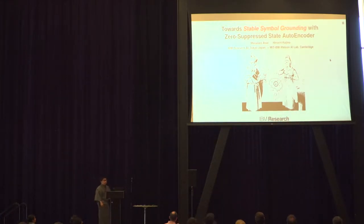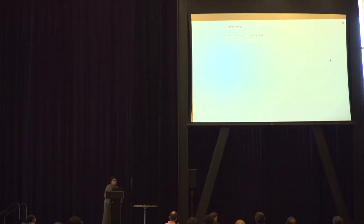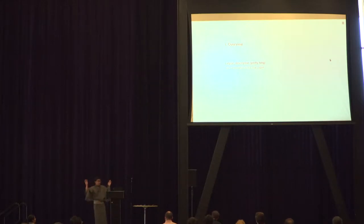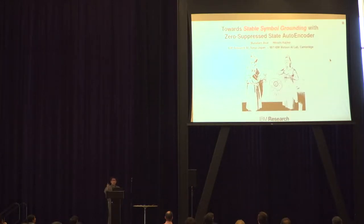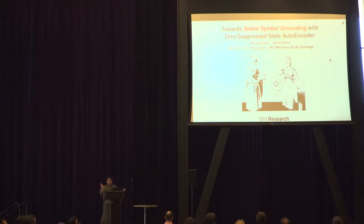Thank you for the introduction. I'm Masataro Asi. This presentation consists of two parts. The first one covers the previous work, which is a complex system that I need to describe thoroughly. After that, I describe my contribution in the new paper. This is a joint work between me and Hiroshi Kajino, also from IBM Research AI Japan. I'm moving to IBM Boston, Cambridge.